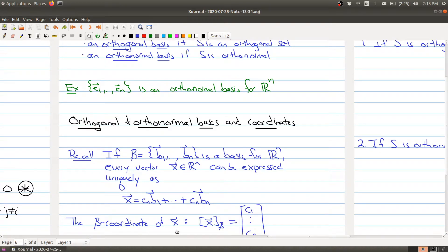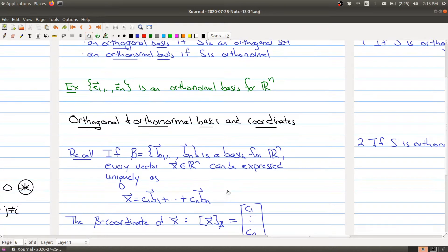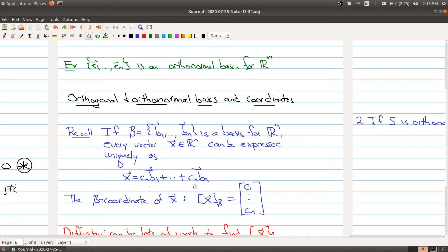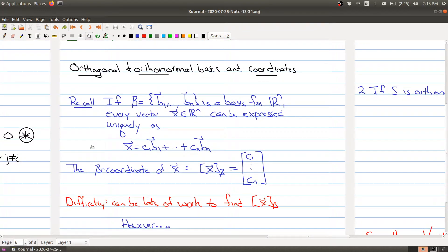The b-coordinate of x captures that information. It captures all of these scalars that you need to build the vector x. We talked about this last class—it can actually be lots of work to find the b-coordinate of x because if you're given an arbitrary basis, you're basically having to solve a system of linear equations. And depending upon the size of your system, that can be a lot of work. Imagine a basis for R^n that had 10,000 elements.